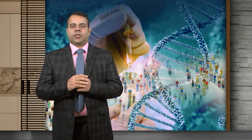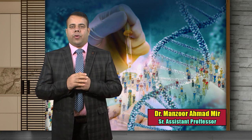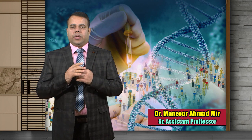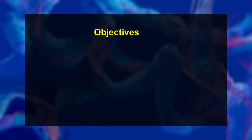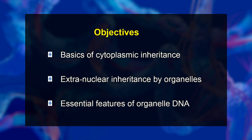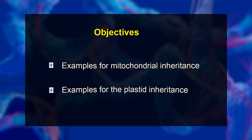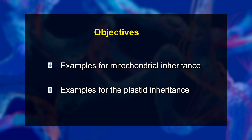Hello and welcome dear students. Today we are going to discuss the topic cytoplasmic inheritance. The main objectives of today's lecture are to know the basics of cytoplasmic inheritance, to understand the extranuclear inheritance by organelles, to understand the essential features of organelle DNA, to explain the examples of mitochondrial inheritance, and to explain the examples of plastid inheritance.